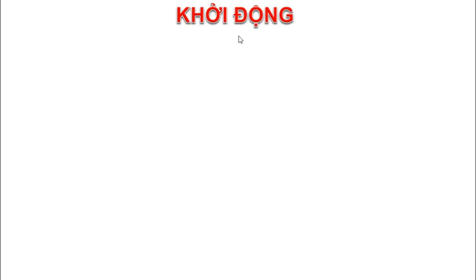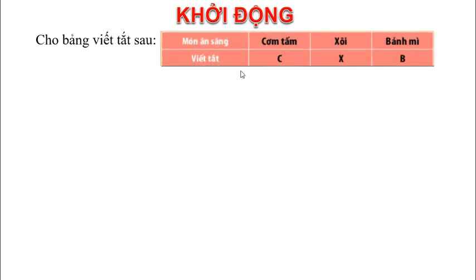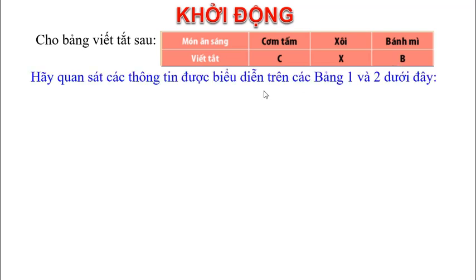Trước khi đi vào phần nội dung chính của bài, các bạn cùng quan sát ví dụ sau. Cô cho bảng viết tắt về các món ăn sáng, đề cập tới 3 món ăn: cơm tấm, xôi và bánh mì. Cách viết tắt là lấy chữ cái đầu tiên trong tên gọi của món ăn. Dựa vào bảng viết tắt, các bạn hãy quan sát các thông tin được biểu diễn trong 2 bảng dưới đây.